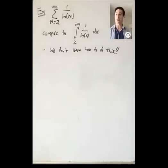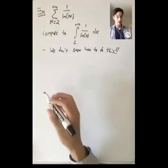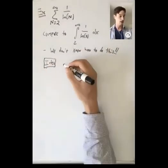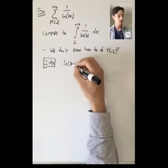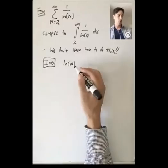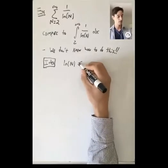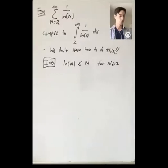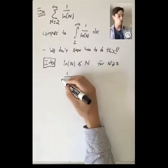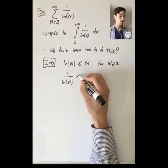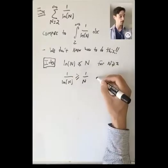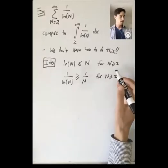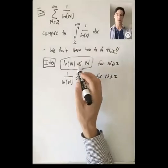The idea is: instead of integrating 1/ln(x), we'll relate it to something we know better. How big is ln(n)? It's definitely less than or equal to n for n ≥ 2. So if we have a smaller thing in the denominator and take the reciprocal, we get something bigger: 1/ln(n) ≥ 1/n for n ≥ 2.